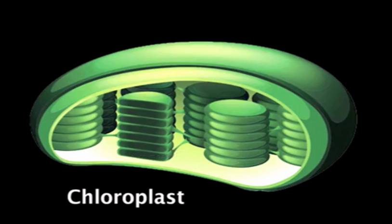Suspended within the stroma is a collection of disc-like sacs called thylakoids, where the chlorophyll molecules are located and where the light reactions of photosynthesis take place. Thylakoids consist of a membrane and a liquid-filled interior called a lumen.